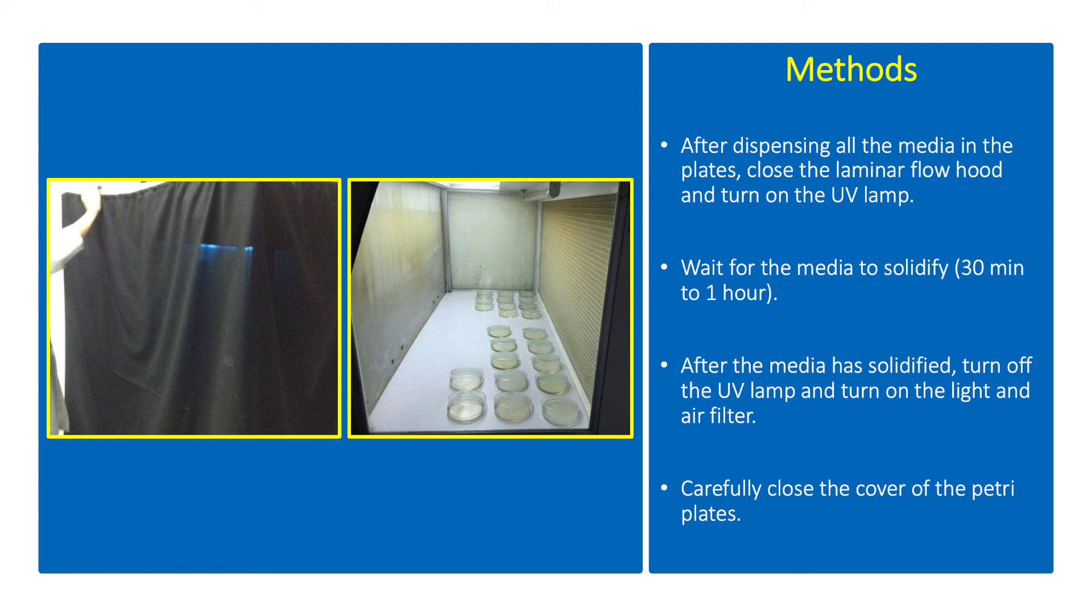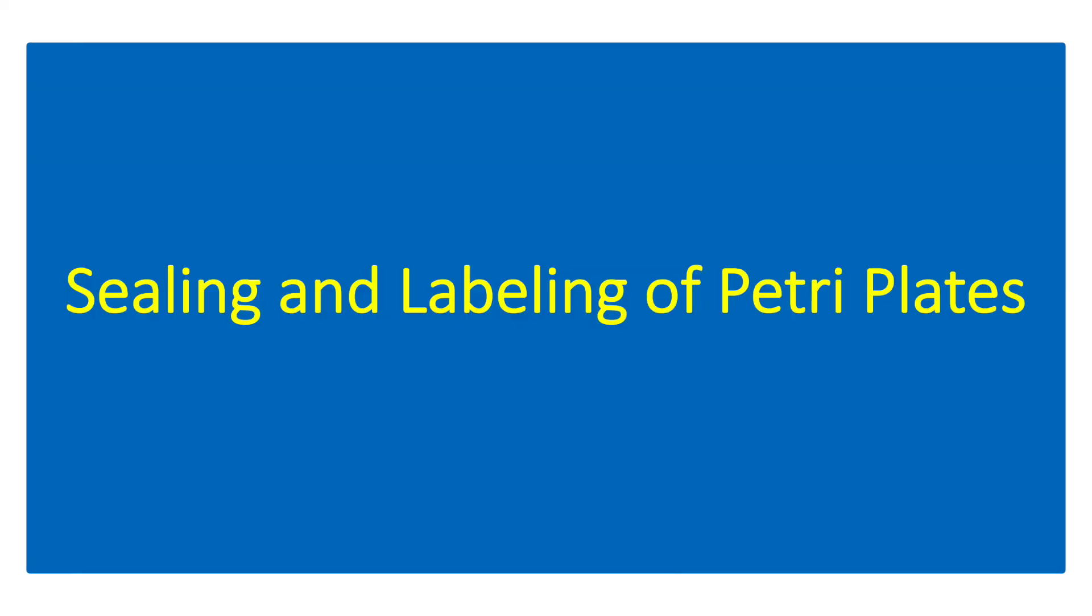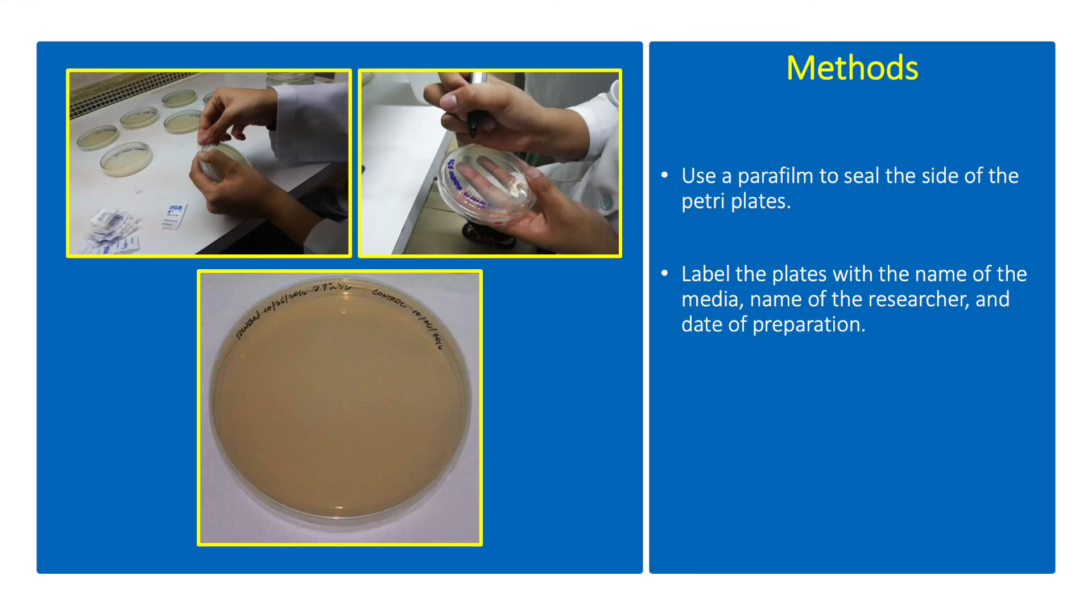After the media has solidified, turn off the UV lamp and turn on the light and air filter. Carefully close the cover of the petri plate. Use a parafilm to seal the side of the petri plates.